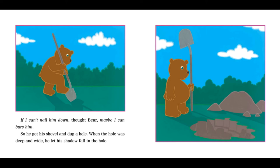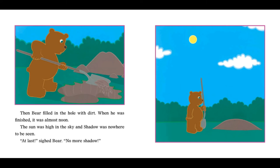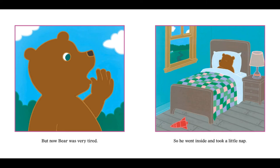If I can't nail him down, thought Bear, maybe I can bury him. So he got his shovel and dug a hole. When the hole was deep and wide, he let his shadow fall in the hole. Then Bear filled in the hole with dirt and when he was finished, it was almost noon. The sun was very high in the sky and shadow was nowhere to be seen. At last, sighed Bear, no more shadow.